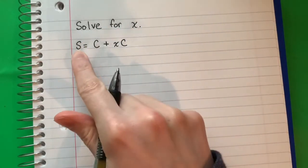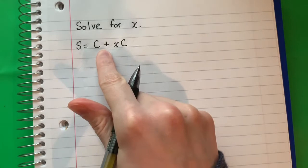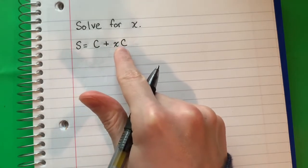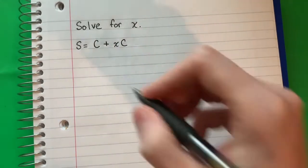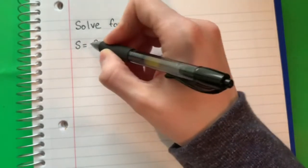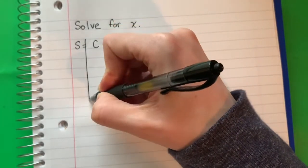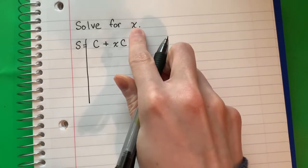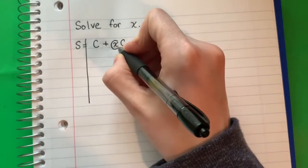Solve for x in the equation s equals c plus x times c. So the first thing that I'm going to do is draw a line. And I want the x alone, so I'm going to circle x.